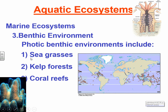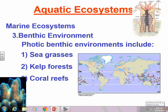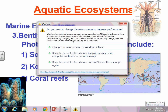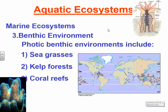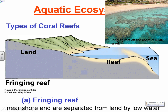There are three main types of coral reefs. The most common is the fringing reef, which is attached to the shoreline and extends out to sea — near shore and separated from land by low water. Here's a picture of one in Israel.